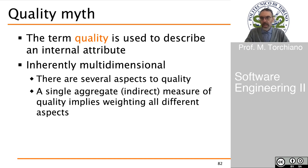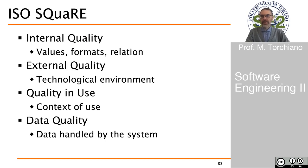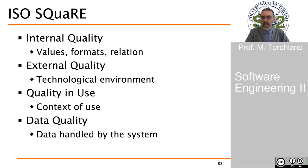The ISO SQuaRE standard defines four different aspects of quality: internal quality, external quality, quality in use, and data quality. They address essentially the internal aspect of the system, the technological environment, the context of use, and the data that is stored into an information system.